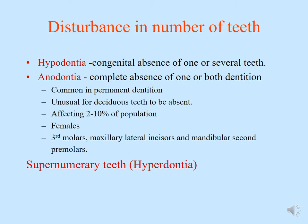Starting with disturbances in number of teeth. First we have hypodontia — hypo means less, dontia means teeth — so congenital absence of one or several teeth is described as hypodontia. Anodontia means complete absence of one or both dentitions. This is common in the permanent dentition; it's very unusual for deciduous teeth to be absent. It affects two to ten percent of the population, is more common in females, and the most commonly absent teeth are third molars, maxillary lateral incisors, and mandibular second premolars.